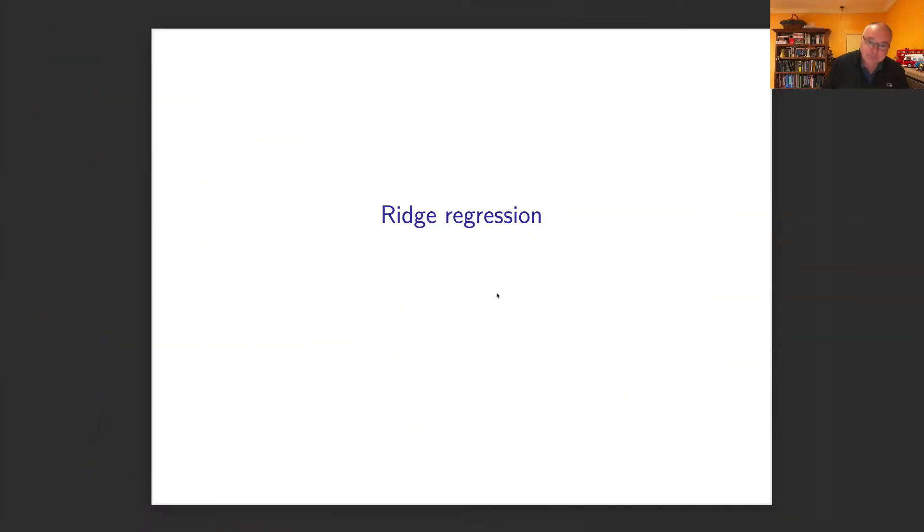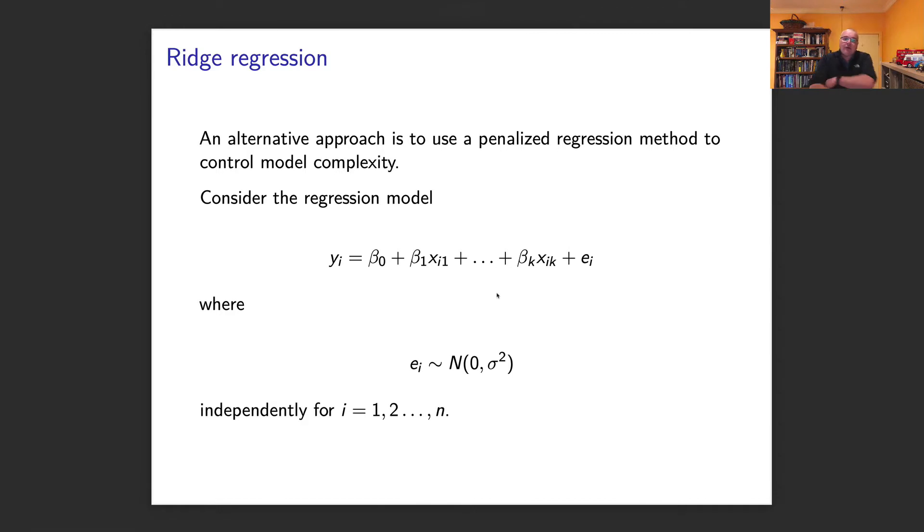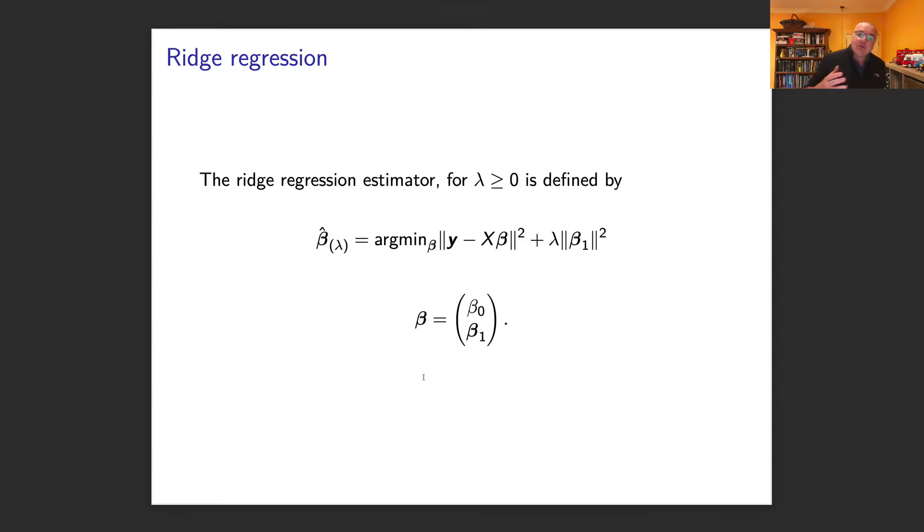Let's assume we've got our standard linear regression, so we've got y equals β₀ plus β₁x₁ plus dot dot dot, the normal stuff. What we can do is we want the model that's going to fit the best but we don't want it to be too big.